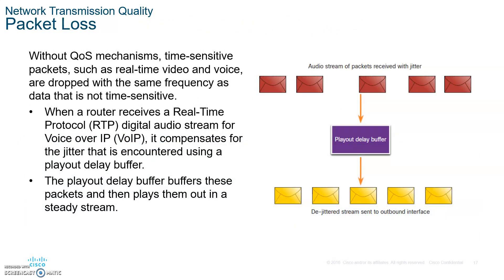RTP — the Real-Time Protocol — when it receives jittered packets, it holds them in a queue (buffer), then transmits them in a steady manner. Please write that down. If jitter is very high, then packets may be dropped.